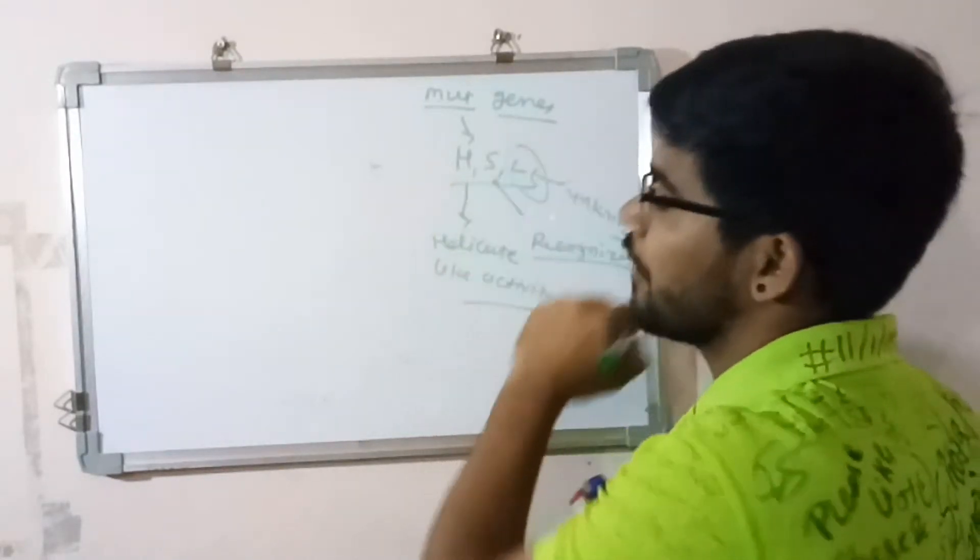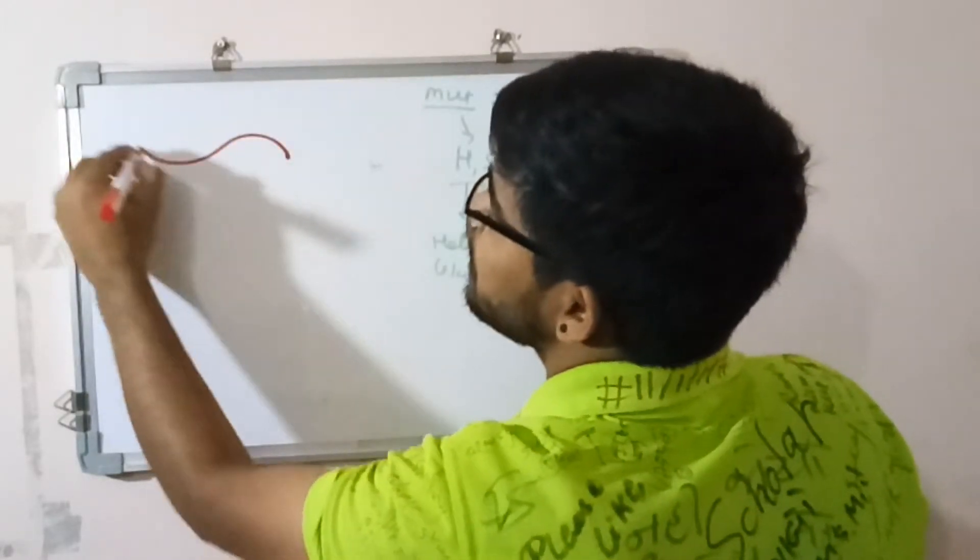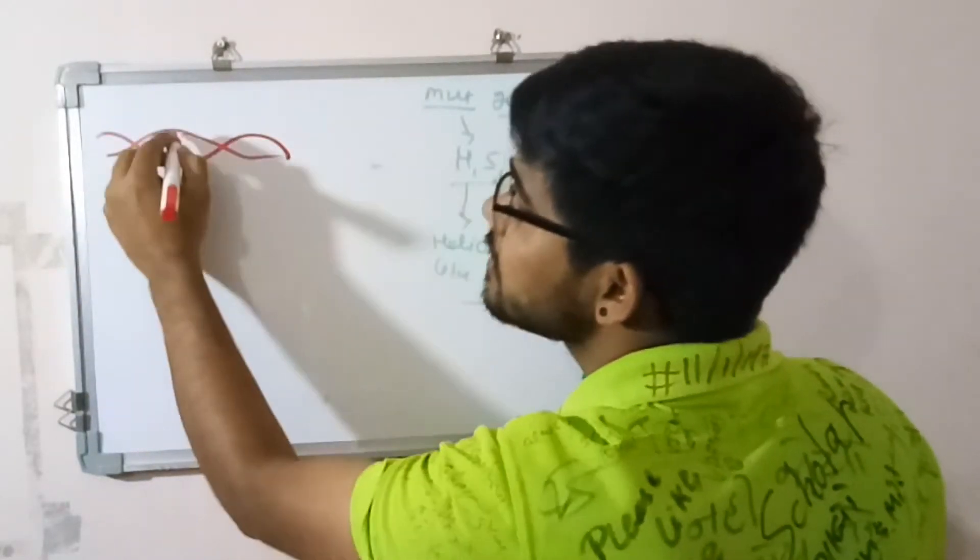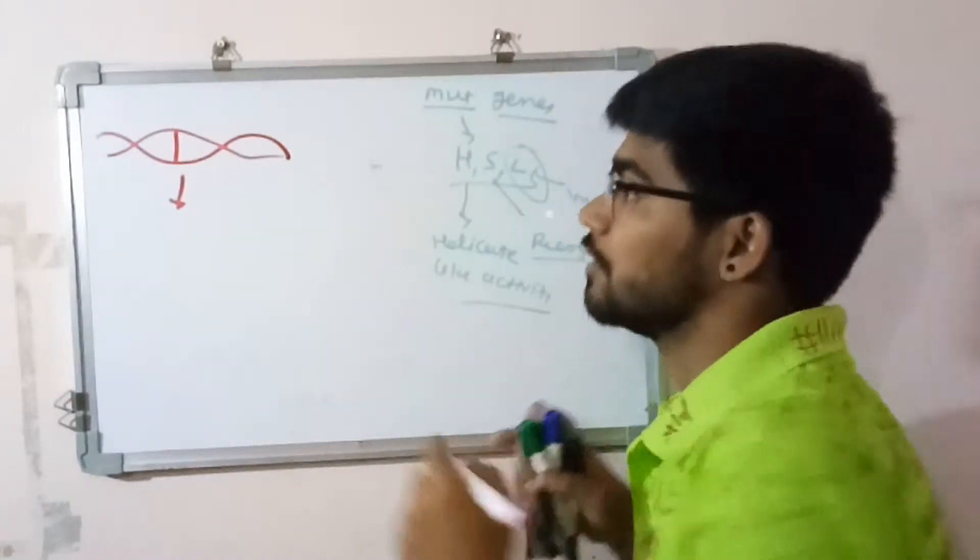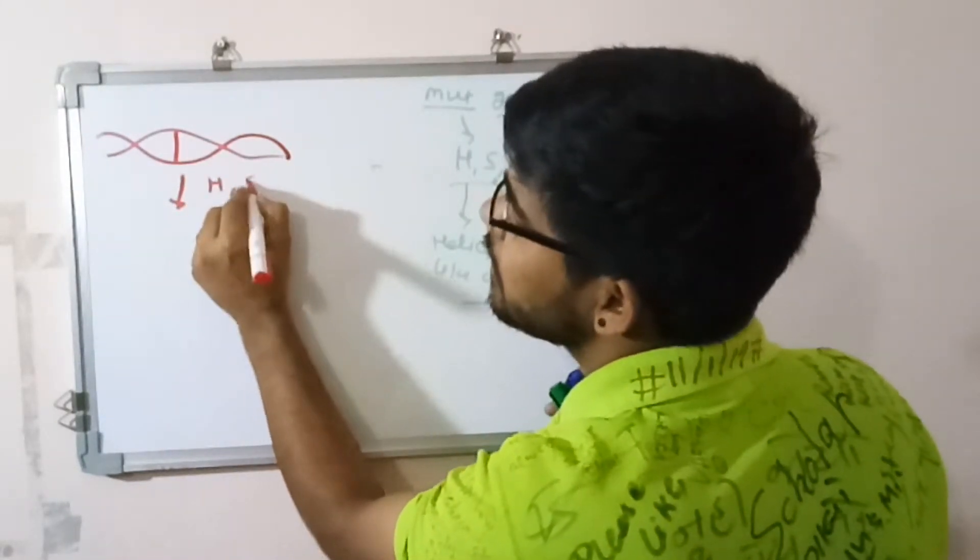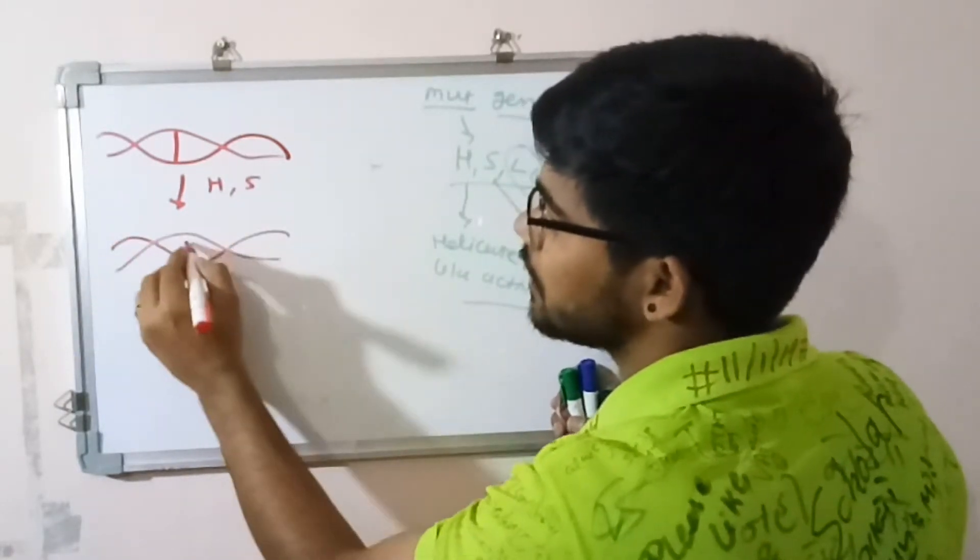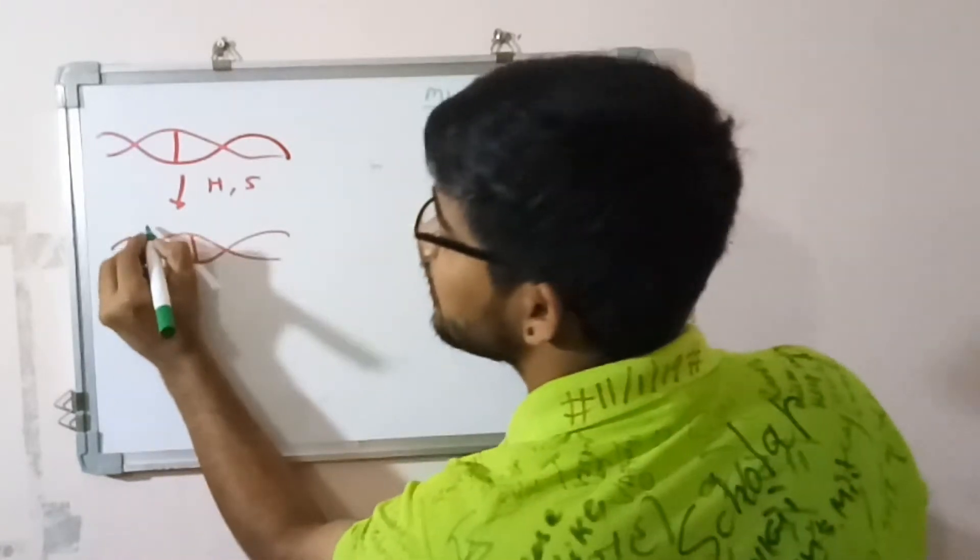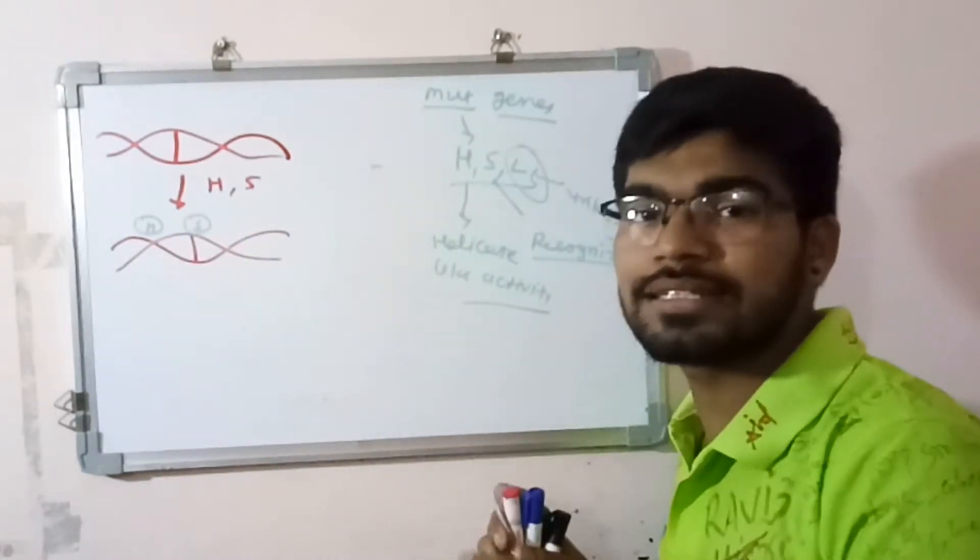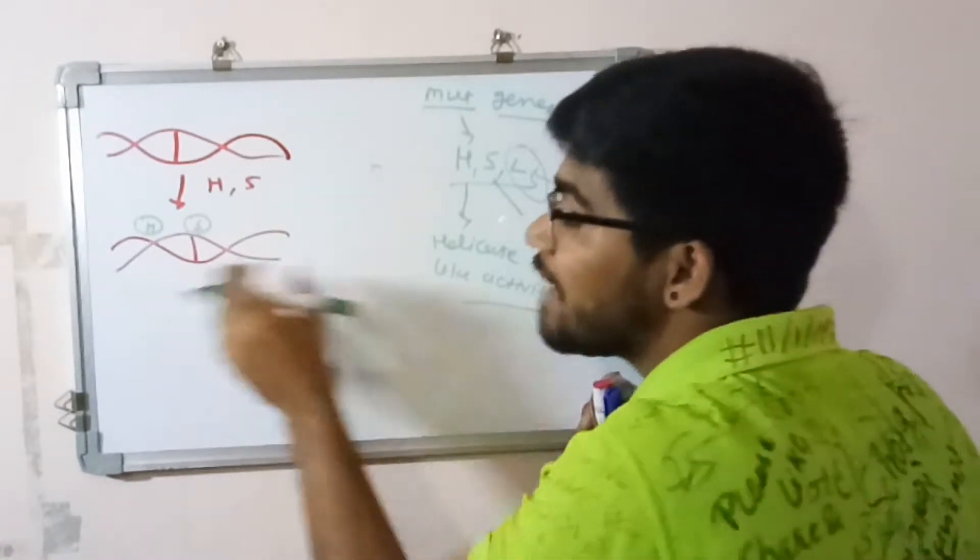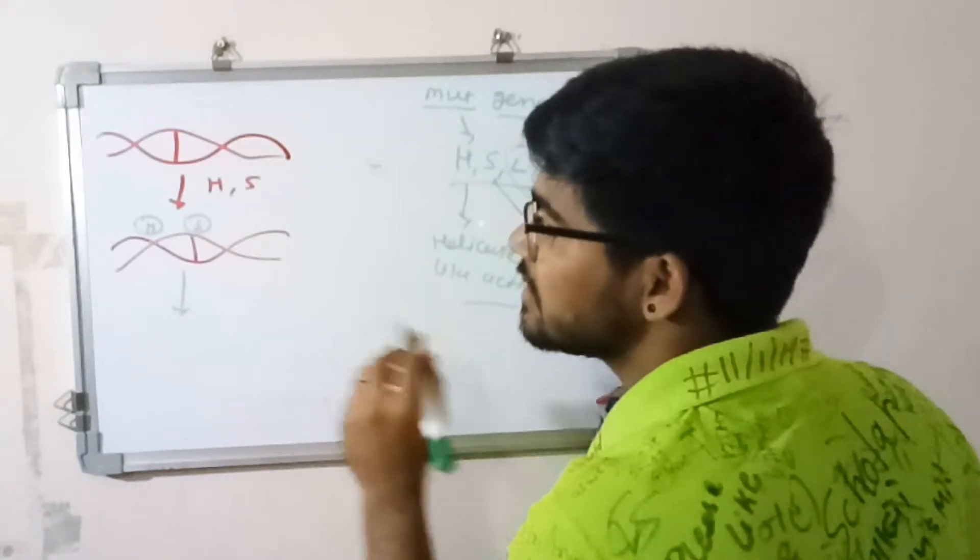Here is our DNA and here is the damage. First of all, two Mut products have come, which are H and S. Here the damage, they both bind. Here the H is there, here the S, and S only works as a recognizer where the damage is. After it recognizes, it recruits several enzymes.